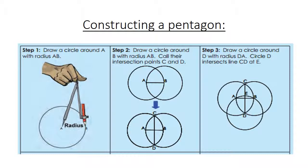Step number 2. Draw a circle around B with the radius AB. We call the intersection points C and D.